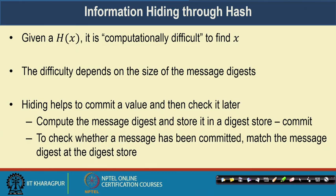The second important property of a cryptographic hash function is the information hiding property. These hash functions are one-way functions, meaning it is computationally difficult to find the original message if only the message digest is given to you. The difficulty depends on the size of the digest: a 2-bit digest may be easy to reverse, but a 256-bit message digest makes it very difficult to guess the original message.